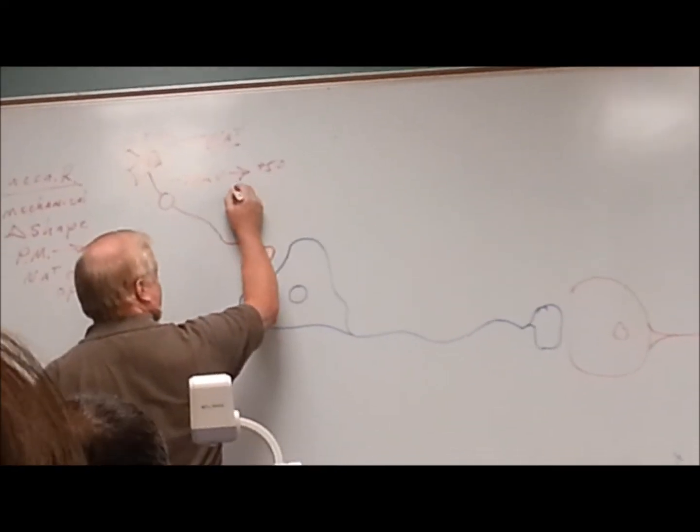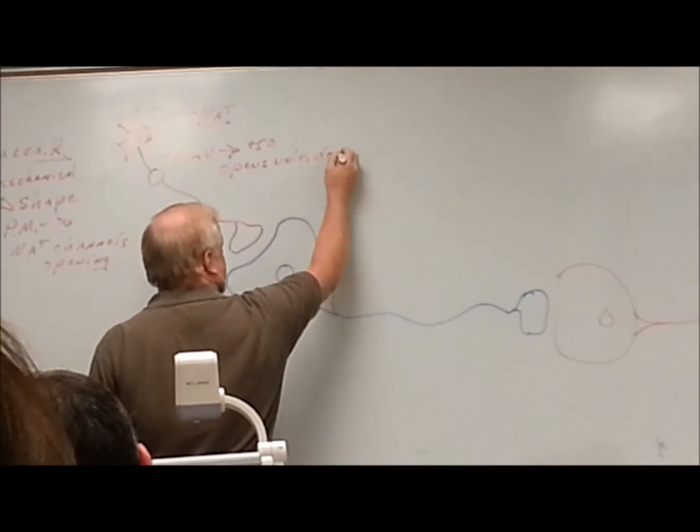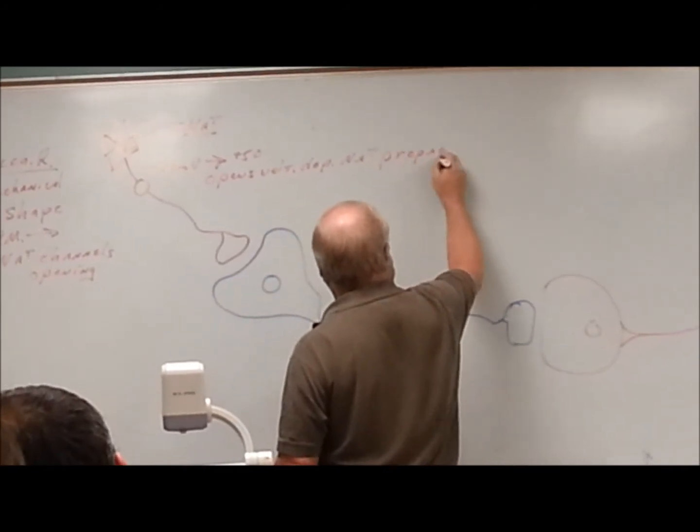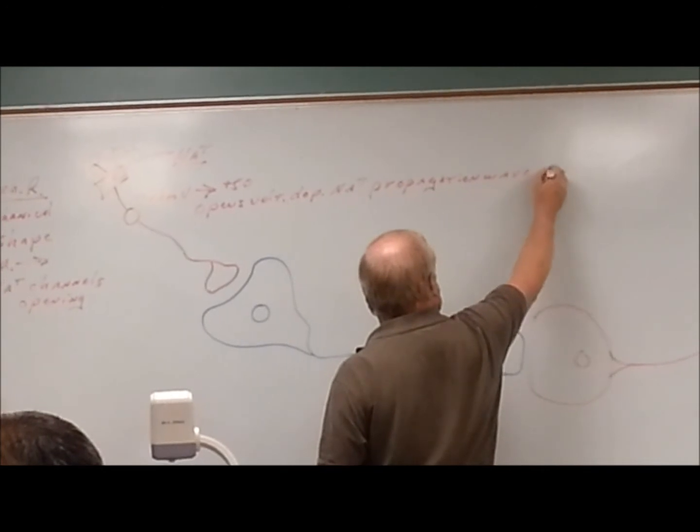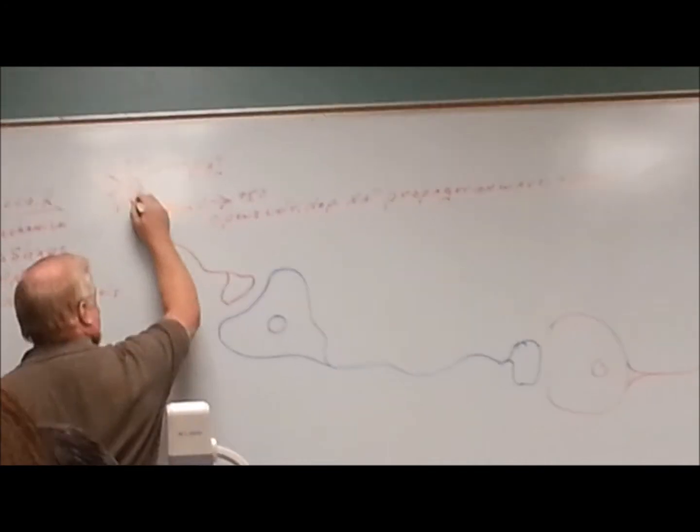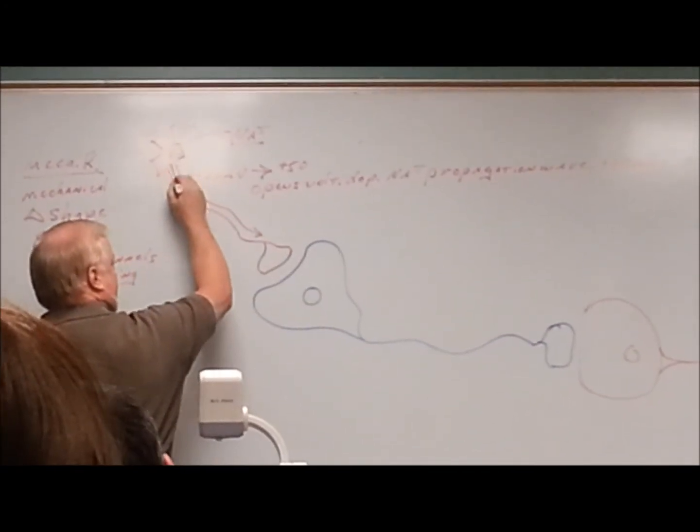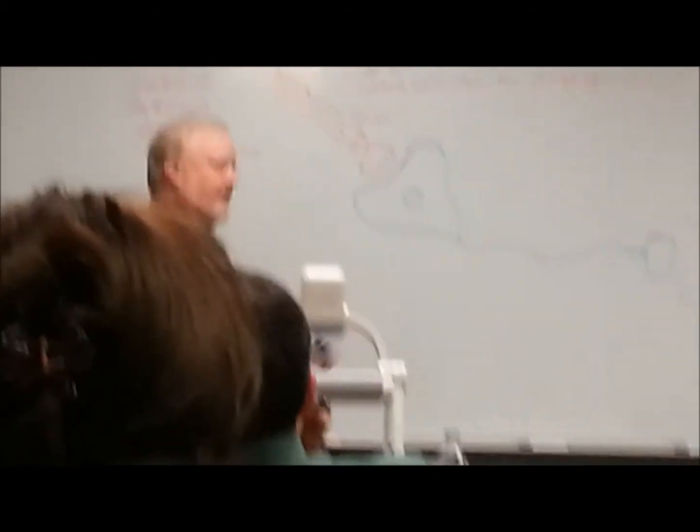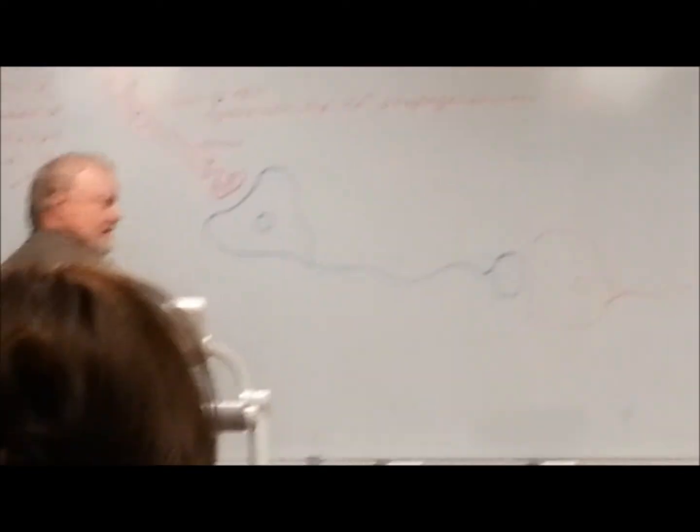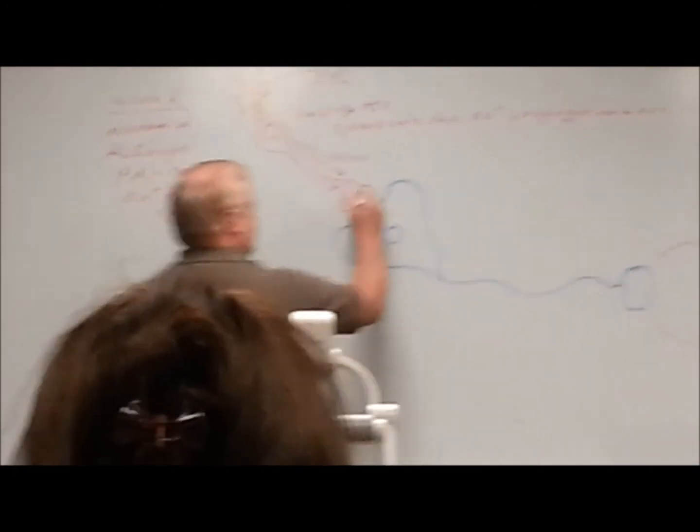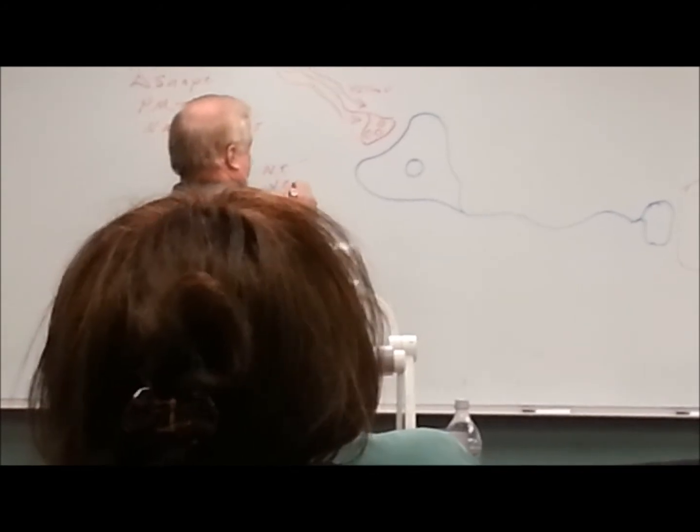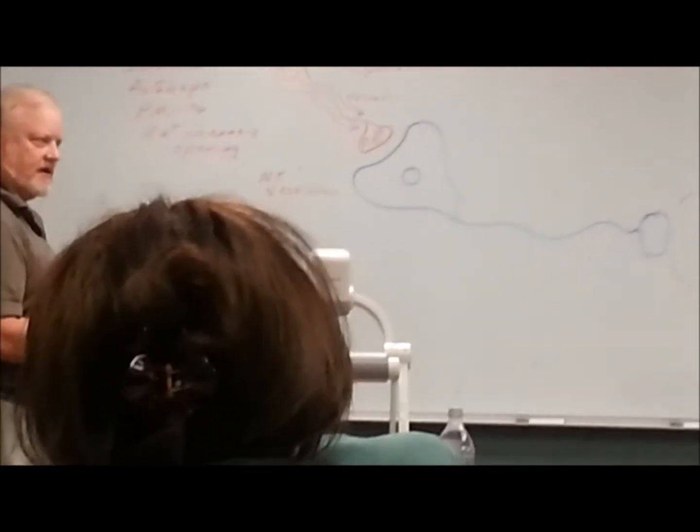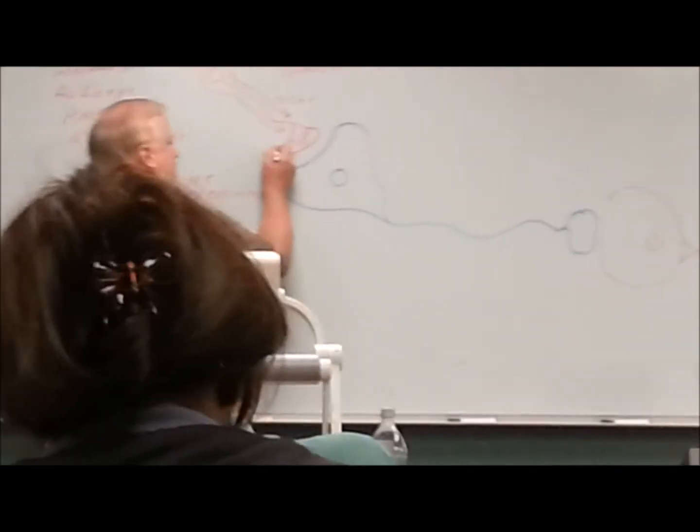That's going to open up what? Depolarization. Voltage-dependent sodium channels. That's going to depolarize the propagation wave. So, it's going to go from here all the way down to here, right? Here's my propagation wave. What happens when it gets down here? We know we have what in this area? Neurotransmitter. Neurotransmitter vesicles, right? So, these are neurotransmitter vesicles. And they're going to need to exocytose, or vomit out, if you will, their contents. Why do they vomit out their contents?